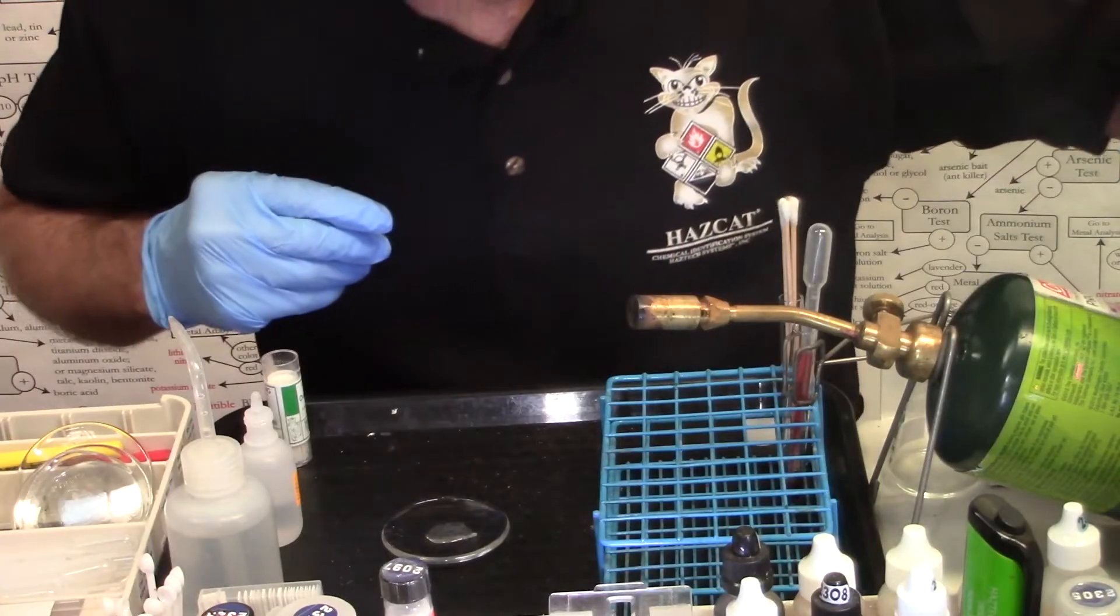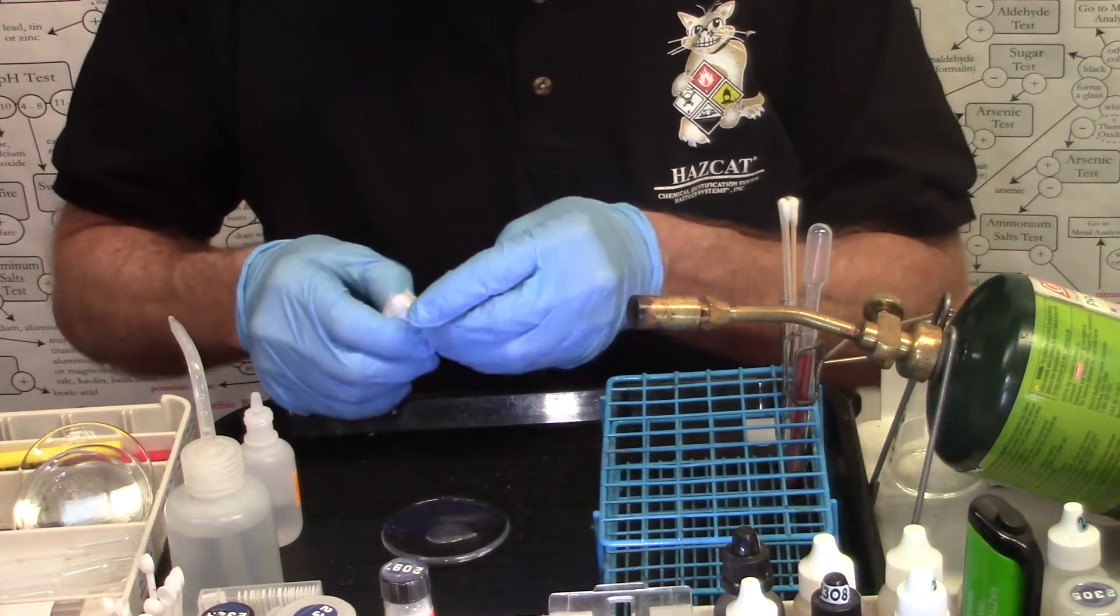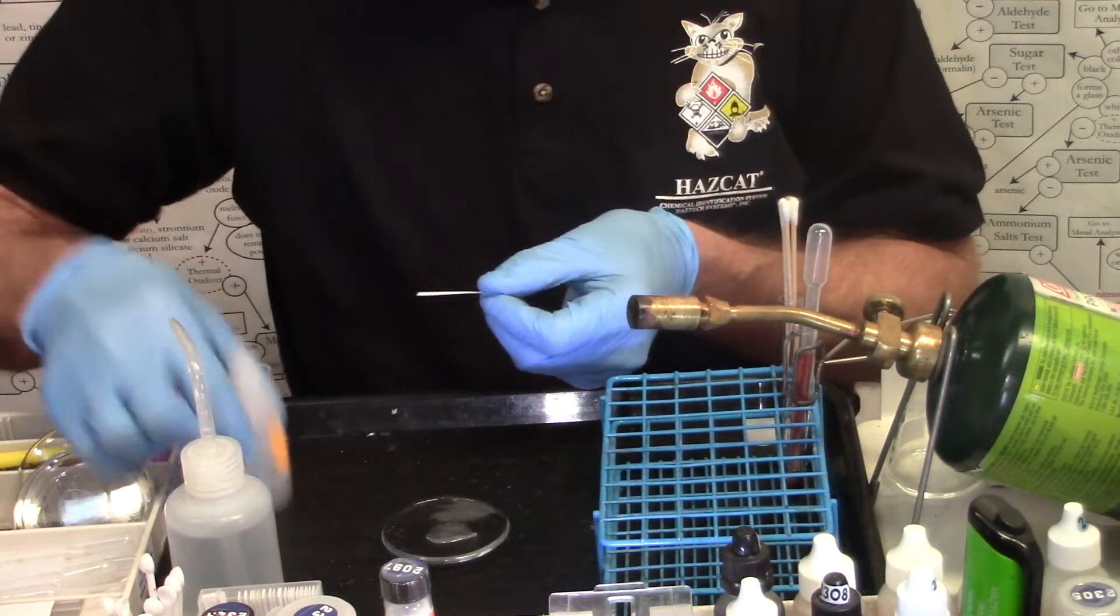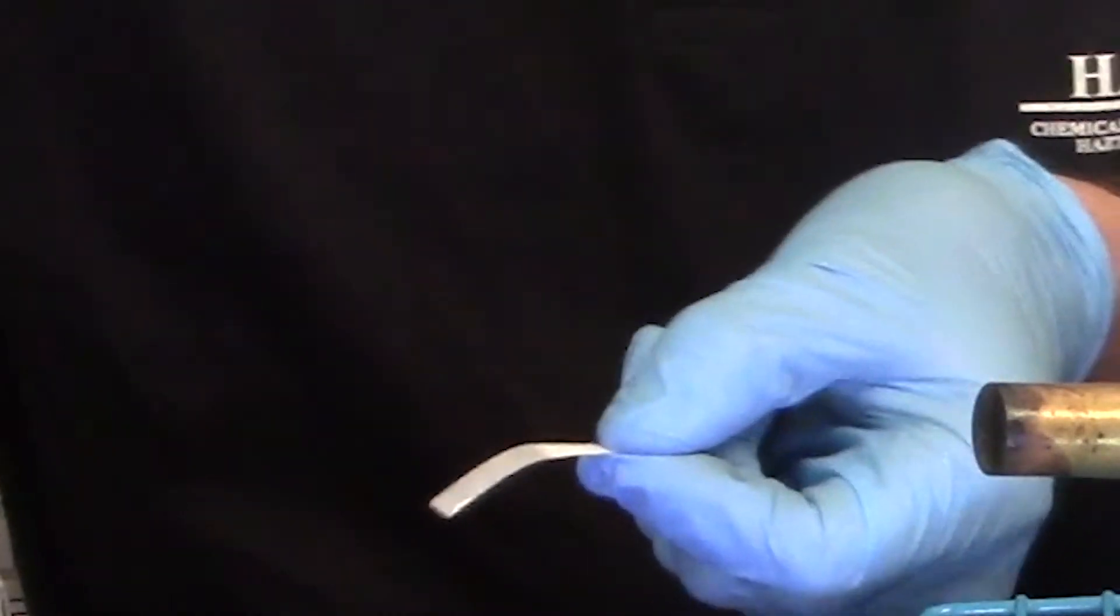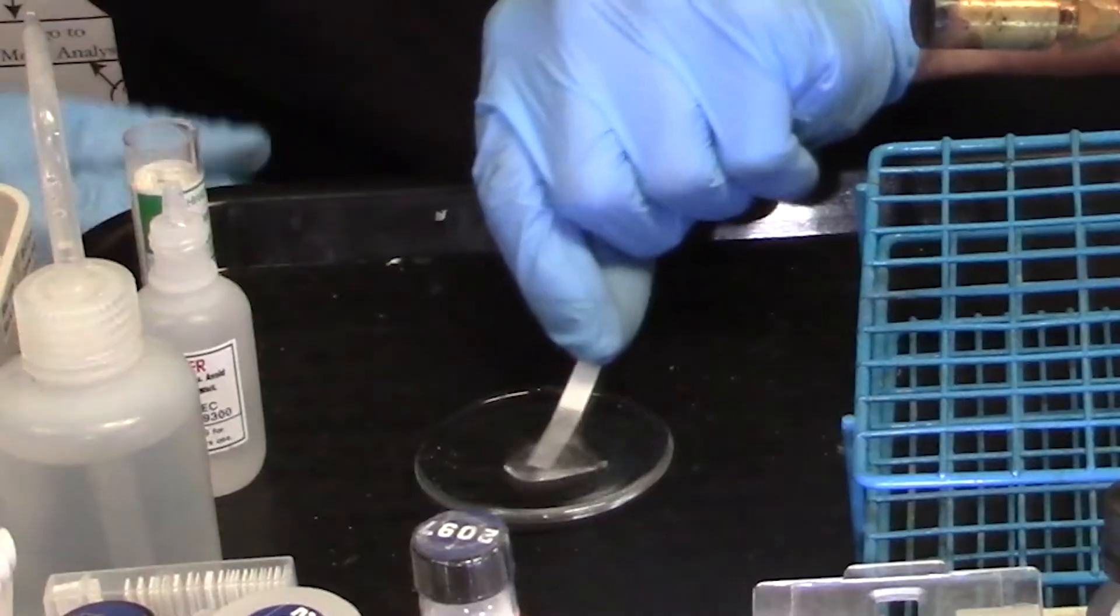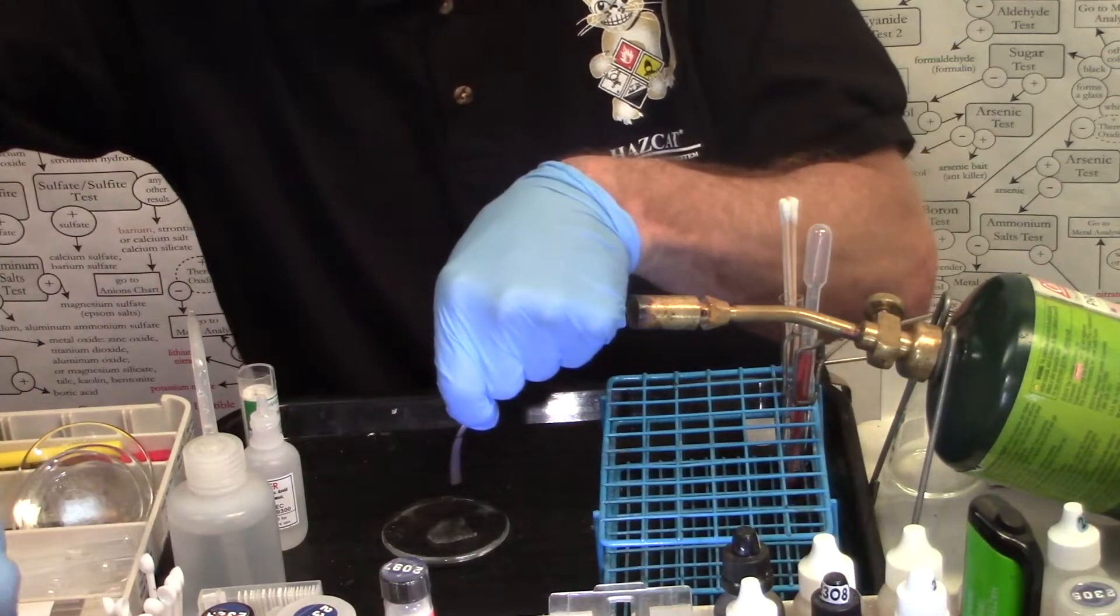To a watch glass. Once again, a strip of oxidizer test paper. Wet it with two drops of hydrochloric acid, RE2301. And that's one one thousand, two one thousand, three one thousand, four one thousand, five one thousand.